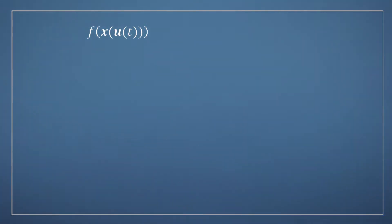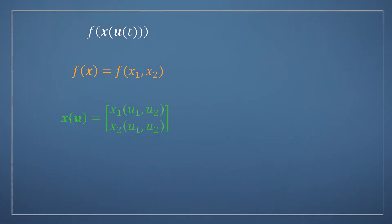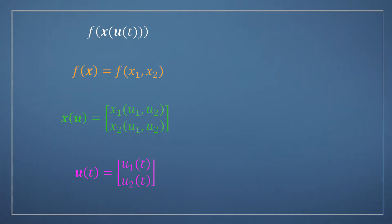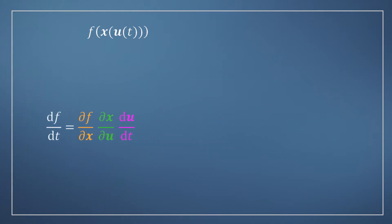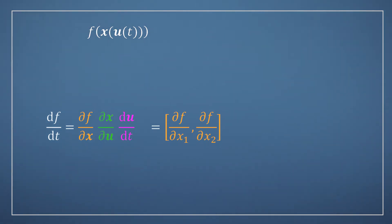Let's start by considering the function f of x of u of t again, where the function f takes the vector x as an input, but this time x is a vector-valued function which also takes a vector u as its input. As in the last video, the bold symbols indicate vectors. So u is again a vector-valued function, and it takes the scalar t as its input. Ultimately, we are still relating the scalar input t to a scalar output f, but we're doing this via two intermediary vector-valued functions x and u. If we'd like to know the derivative of f with respect to t, we can essentially write the same expression as the univariate case, except that now several of our terms are in bold. We've already seen that differentiating the scalar-valued function f with respect to its input vector x gives us the Jacobian row vector.